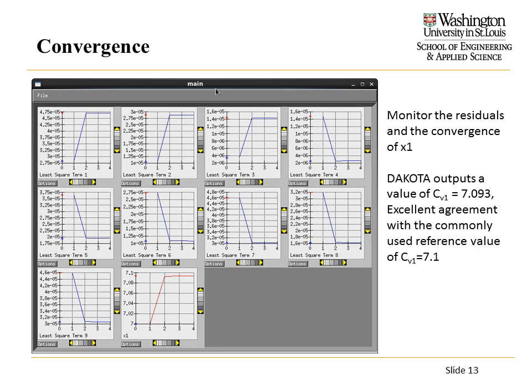This shows the residuals for nine experimental data points and the convergence of the X1 design variable. Since my initial guess was pretty good, it converged very fast. The value it converged to — 7.093 — agrees excellently with the reference value of 7.1, which is what's actually used. So whoever calibrated it originally calibrated it right the first time.